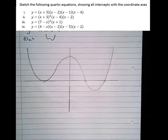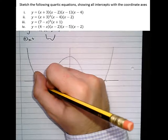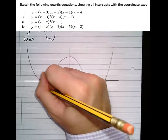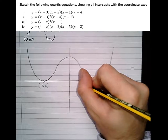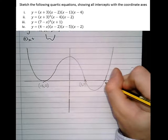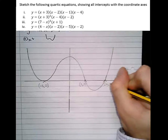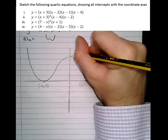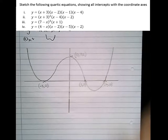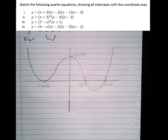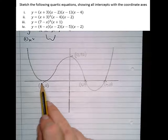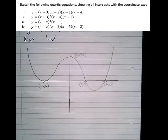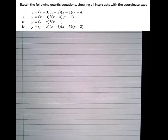So the roots here are at minus 3, 0. Then there's one at 2, 0. Then there's one at 4, 0. And the y-intercept you can see is at 0, 72. So that's that one drawn. The double root, just like in cubics, just touches the axis then turns back on itself. Right, the next one.